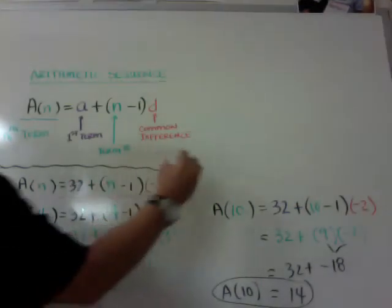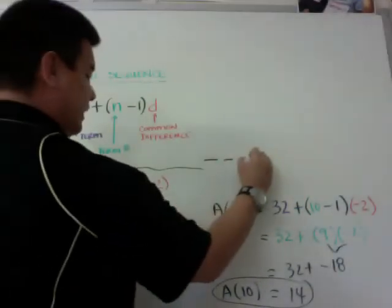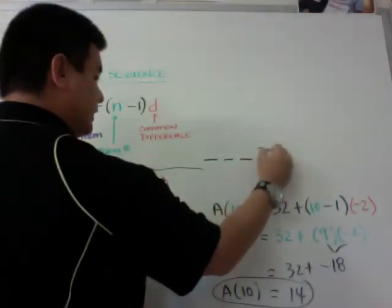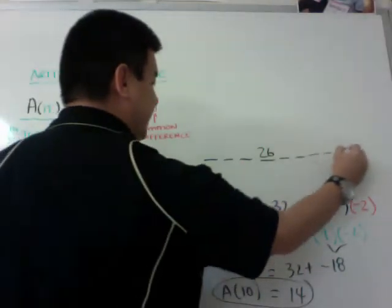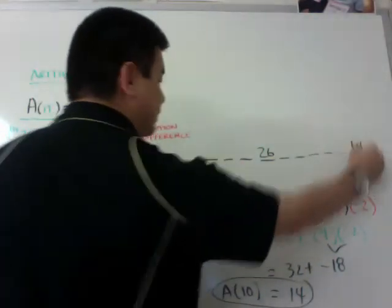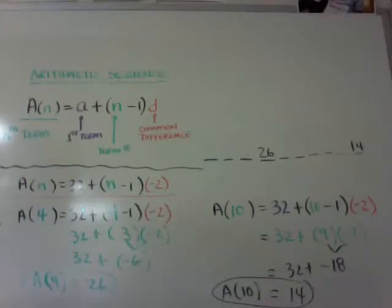So as we're doing numbers, whatever the number is, 1, 2, 3, this fourth term will be 26, 5, 6, 7, 8, 9, 10. The tenth term is going to be 14.